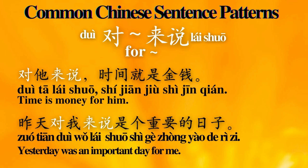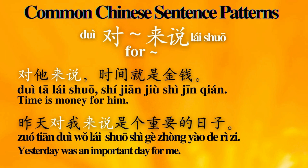Number 8: 对...来说 — 'For someone.' Sentence examples: 对她来说，时间就是金钱。 Time is money for her. 昨天对我来说是个重要的日子。 Yesterday was an important day for me.